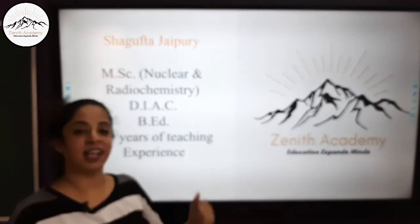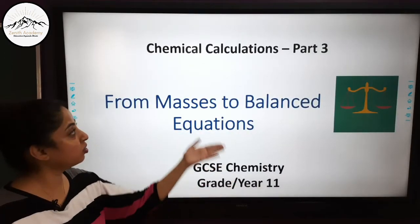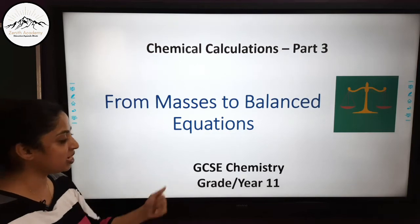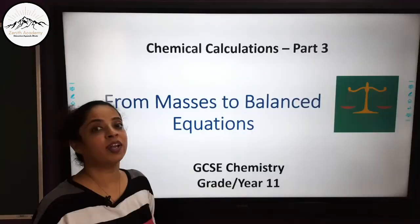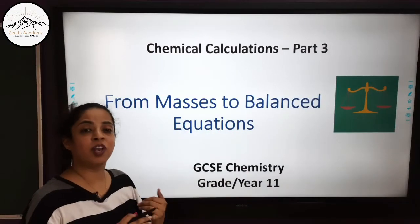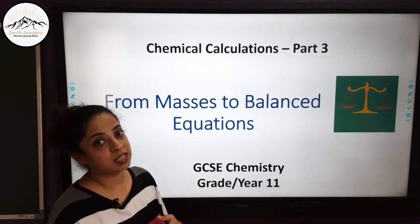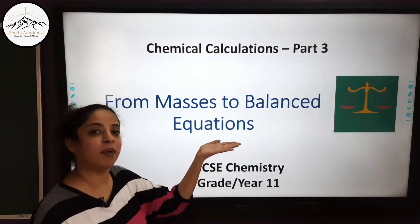Hello, my dear students and welcome to Zenith Academy Online. My name is Shagufta Jaipuri and we are on part 3 of chemical calculations for GCSE chemistry year 11 and also for ICSE class 10. In this video module we will study how to balance equations if masses of reactants or products are given, or how to find the stoichiometry — that is the coefficients of the reactants and products — if the masses are known. Apart from this major concept, we will also talk about limiting reagents and the conservation of mass.